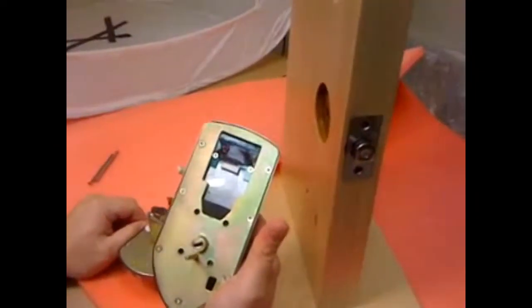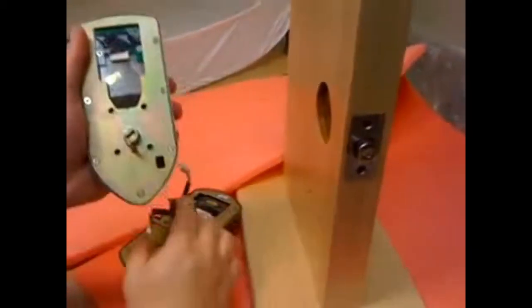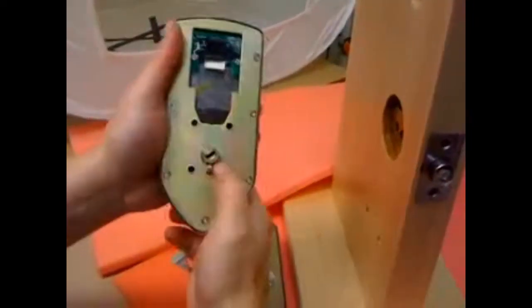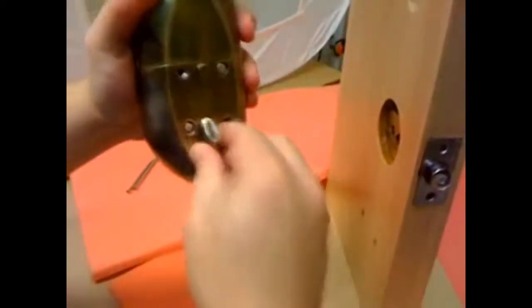But we did get some calls that people were confused by the instructions. Really the hardest part is knowing to trim this to fit the length of your door. And make sure this slot here is vertical at the same time this part is vertical.